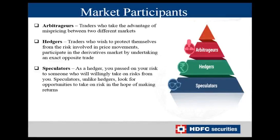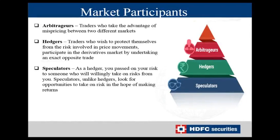Now let us understand the basic market participants in the derivative market. There are three kinds: arbitrageurs, hedgers, and speculators. Arbitrageurs take advantage of mispricing between two markets. As covered earlier, if the price is lower in the cash market but higher in the futures market, you can sell in the futures market and buy in the cash market — this is an arbitrage opportunity. These are traders who take advantage of such mispricing between different markets.